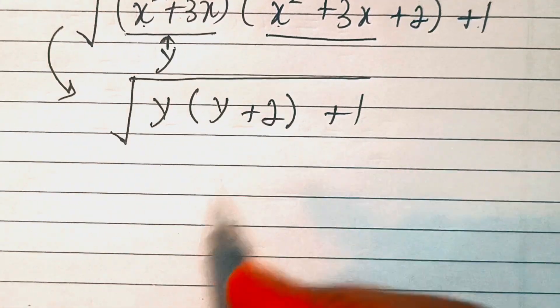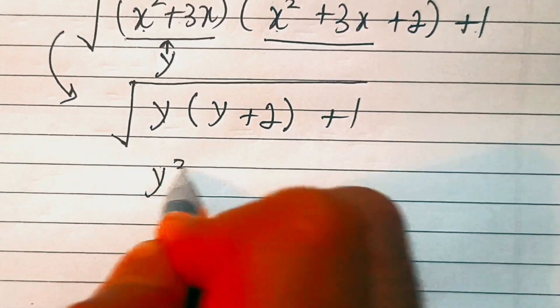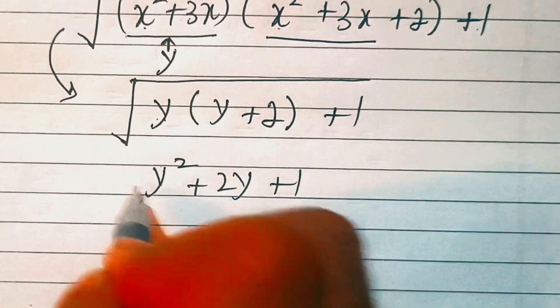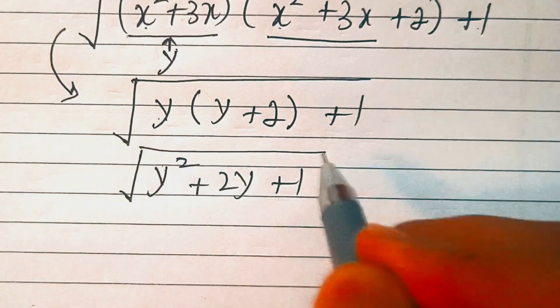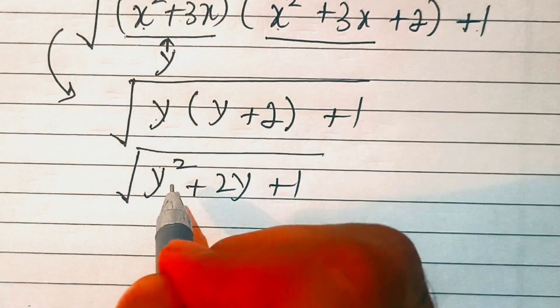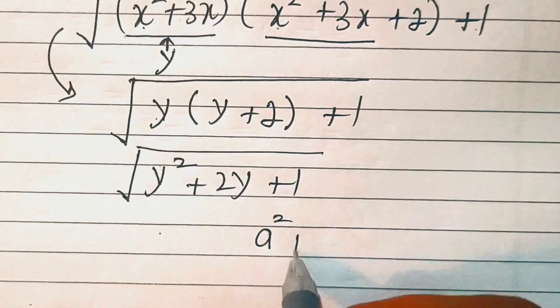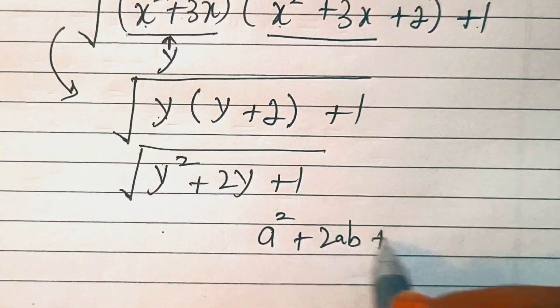Let's multiply this. We'll have y squared plus 2y plus 1, whole square root. Now this is of the form a squared plus 2ab plus b squared.